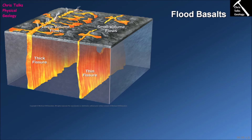You're probably thinking to yourself, well how is this different to a shield volcano? The answer is it's all about scale, and that's going to become clear in a couple of diagrams. In terms of the eruption itself, flood basalts are associated with fissures, and as you can see in this diagram, fissures typically come in a couple of different varieties — we have thin ones and thick ones.